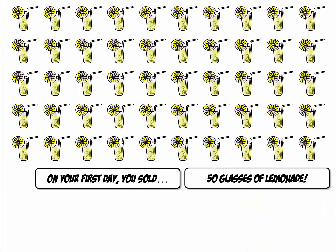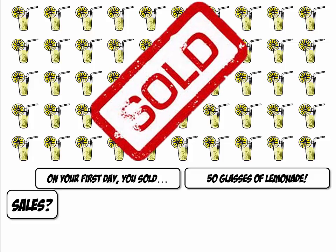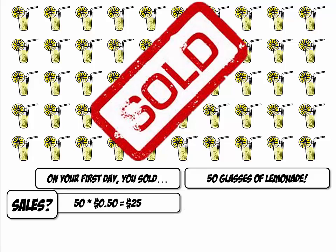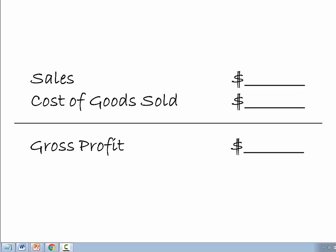On your first day, you sold 50 glasses of lemonade — what a success! What were your sales? You sold 50 glasses at $0.50 per glass, which gave you $25 in cash. 10 glasses were unsold. Based on the previous information, can you tell me what your sales and cost of goods sold was? When we know those numbers, we can calculate our gross profit.